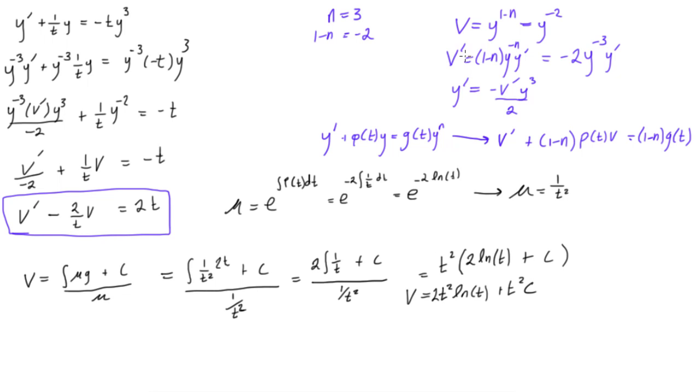Now something else we said, we want to solve this in terms for y, right? Because that's our original differential equation is given in terms of y, and we just made up this variable v. So if we go up here, we see that v is equal to y to the power of minus 2, right? y to the power of 1 minus n equals y minus 2. So we can rewrite this v part.